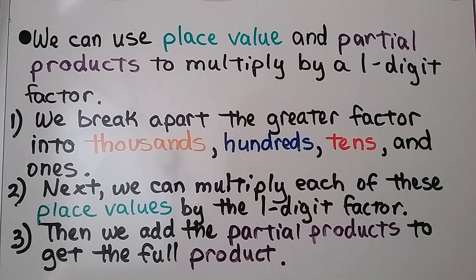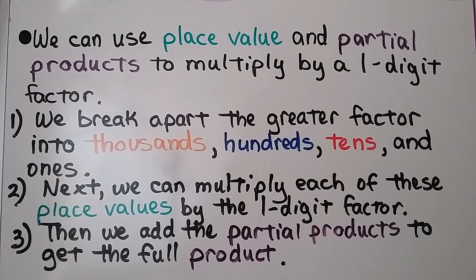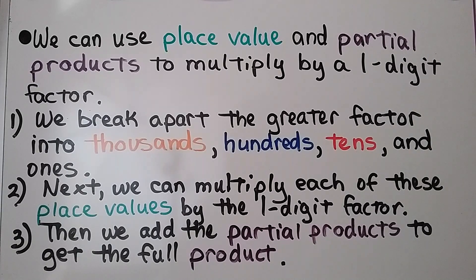We can use place value and partial products to multiply by a one-digit factor. We break apart the greater factor into thousands, hundreds, tens, and ones. Next, we multiply each of these place values by the one-digit factor. The last thing we do is add the partial products to get the full product.